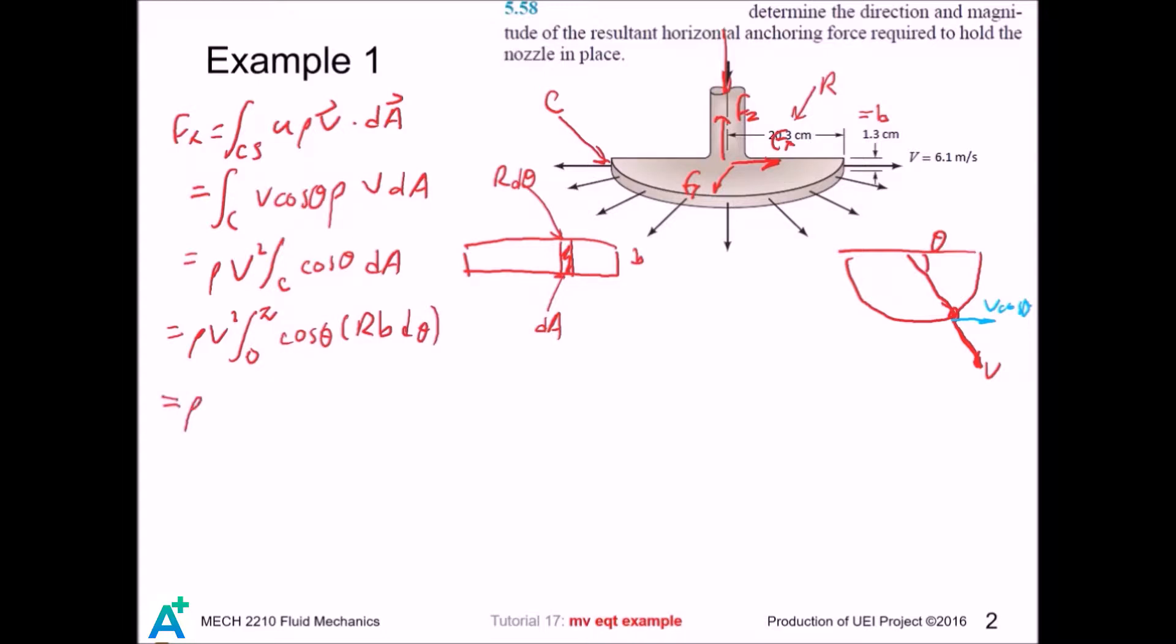And we move all the constants out. But remember, for cosine curve, it looks like this. And the area here exactly cancels out. So this goes 0, and fx is 0. Similarly, for y component, we replace the u by v.